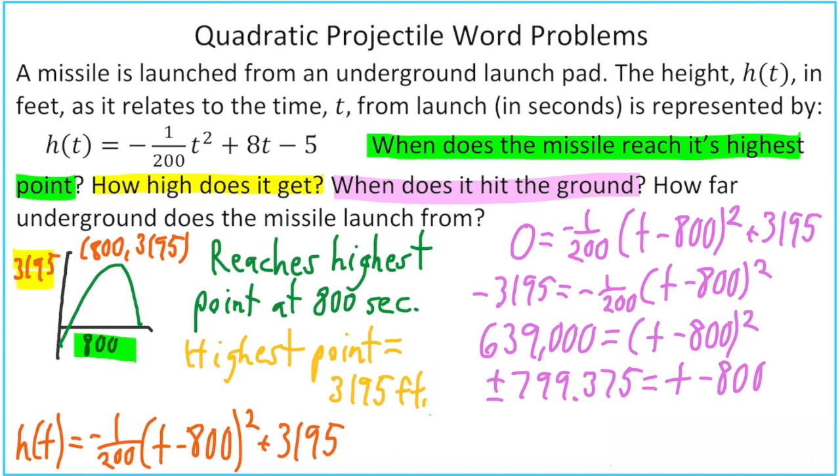If we go ahead and rearrange the order here and put t equals, we get t equals 800 plus or minus our 799 number. So this gives us two answers, but we're interested in when it hits the ground after going up into the air. So we're going to use the 800 plus 799 number. And we end up with 1,599.375 seconds. Notice that if I go 800 minus 799.375, I would get a number less than one. You can see that on the graph. Less than a second into flight, this missile would hit ground level on the way up.